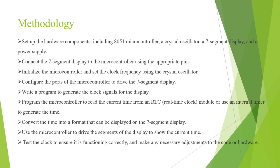An assembly level program is written for the functioning of the digital clock with hexadecimal values. The program is written to read the current time and convert it into a format that can be displayed on a 7-segment display. Then the microcontroller drives the segments to show the current time, and we test the clock to ensure it is functioning correctly, making any necessary adjustments if required.